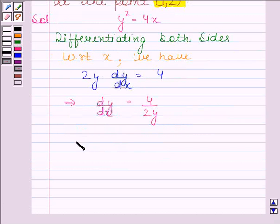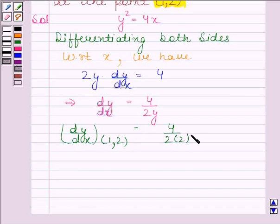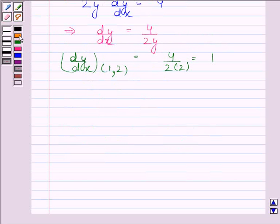The value of dy/dx at the point (1, 2) is equal to 4 divided by 2 times 2, and this is equal to 1. We have learnt that